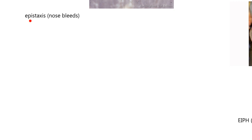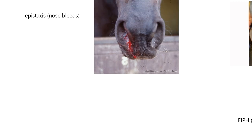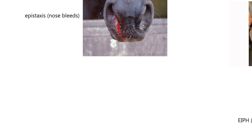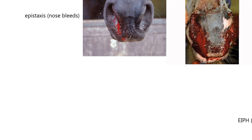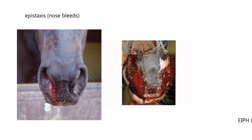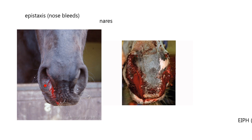Another respiratory disorder is nosebleeds, medically termed epistaxis. Here are some images: a horse with a bloody nose, and another with even more blood — many racehorses have nosebleeds after a race. When you see blood at the nares — the openings of the nostrils — you don't actually know where in the respiratory tree it's coming from. It could be just a few inches in, or from a tumor or injury, or from further up the trachea, bronchi, or even the distal lung tissue.